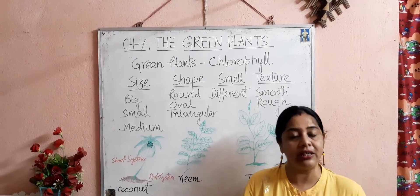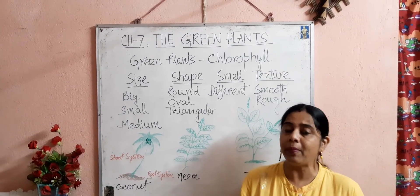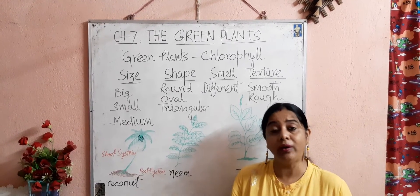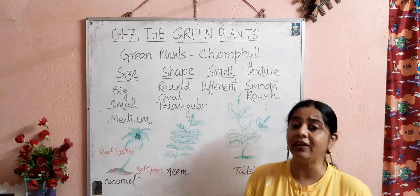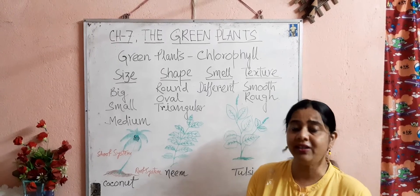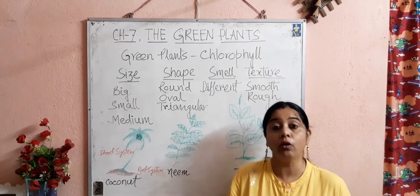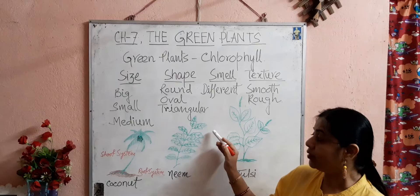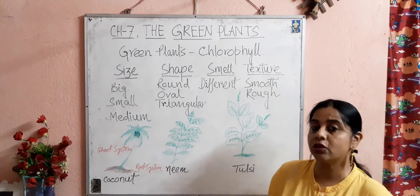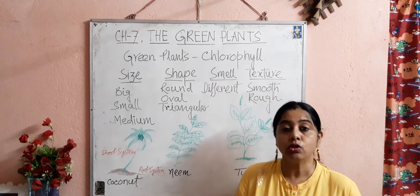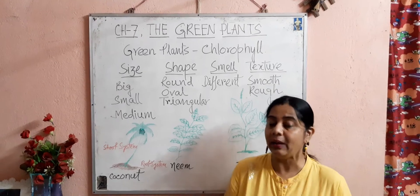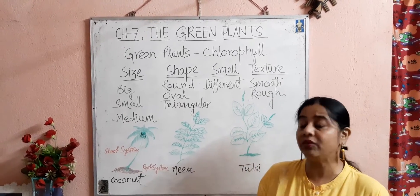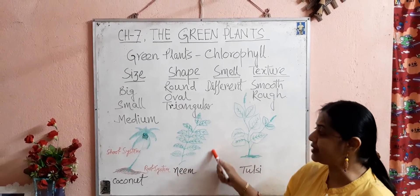Here students, I would like to tell you that most of the plants on this earth's surface appear green to us. Why? What is the reason that most of the plants appear green to us? A green pigment called chlorophyll is present in the leaves of the plants, which makes the plant green. This chlorophyll helps the plants to synthesize food with the help of sunlight, air — that is carbon dioxide — water, and in the presence of this chlorophyll, green plants synthesize their food.